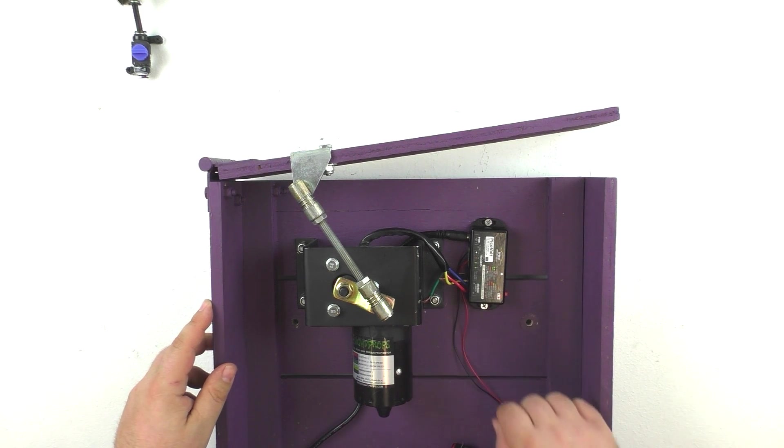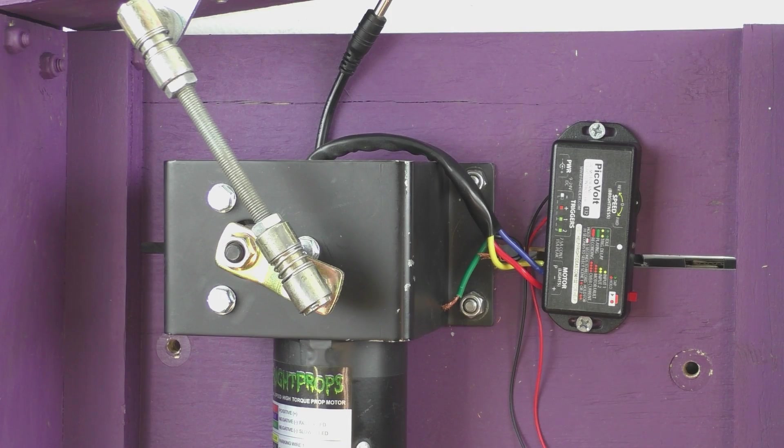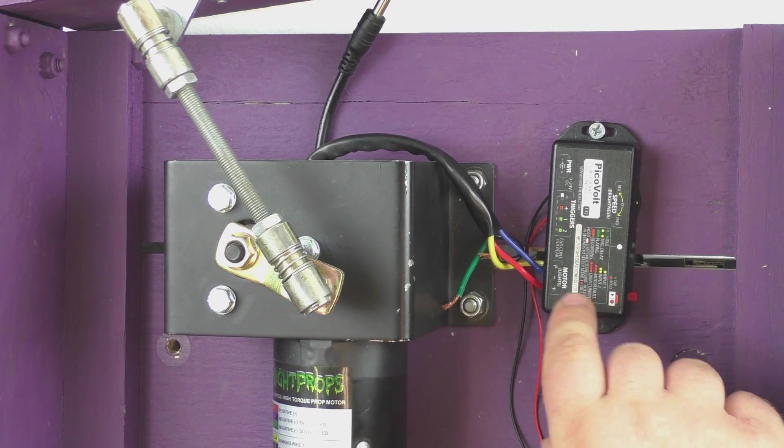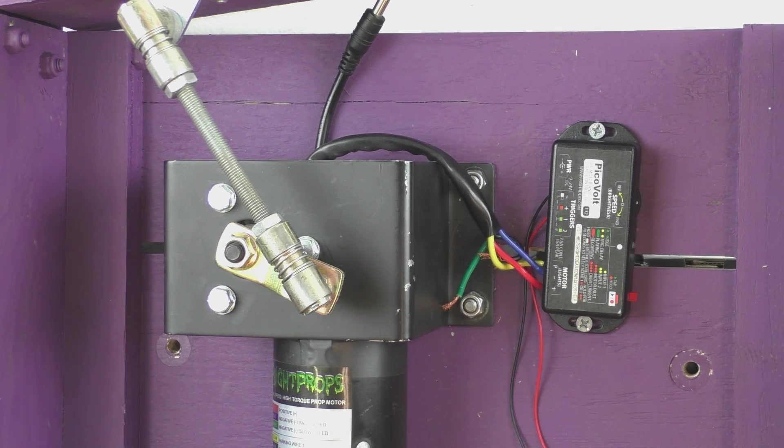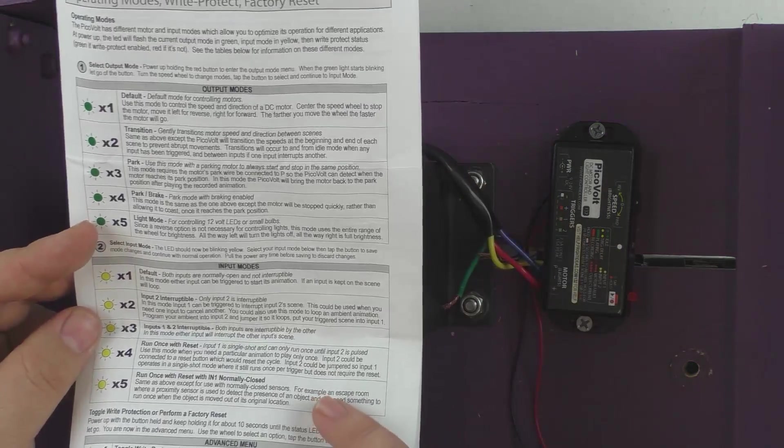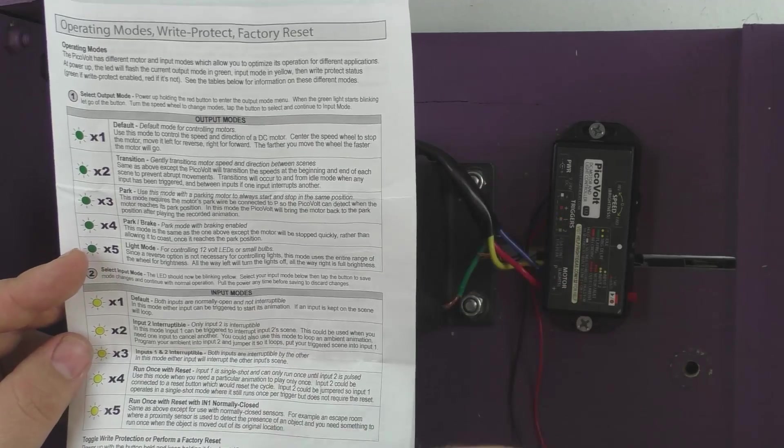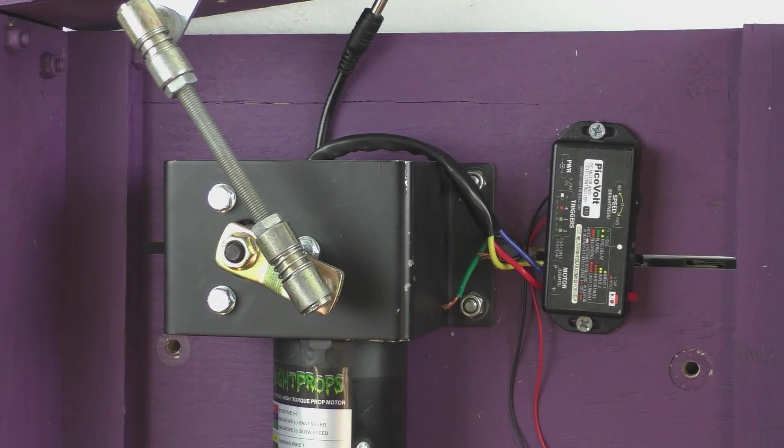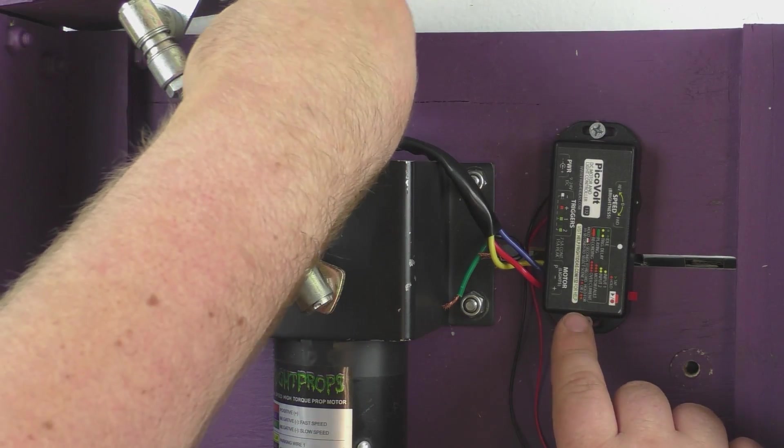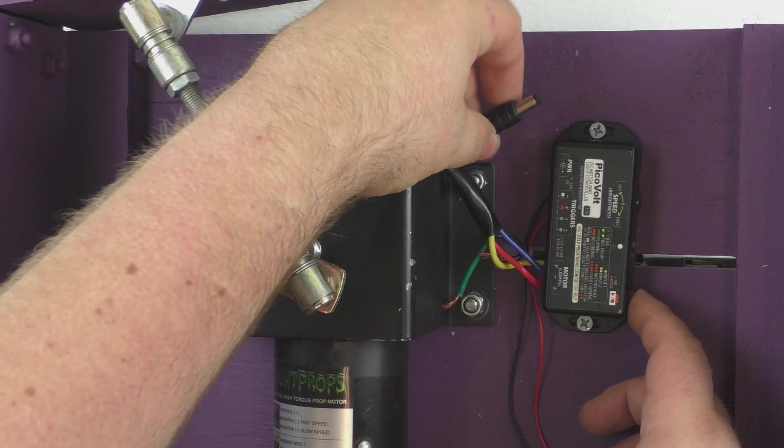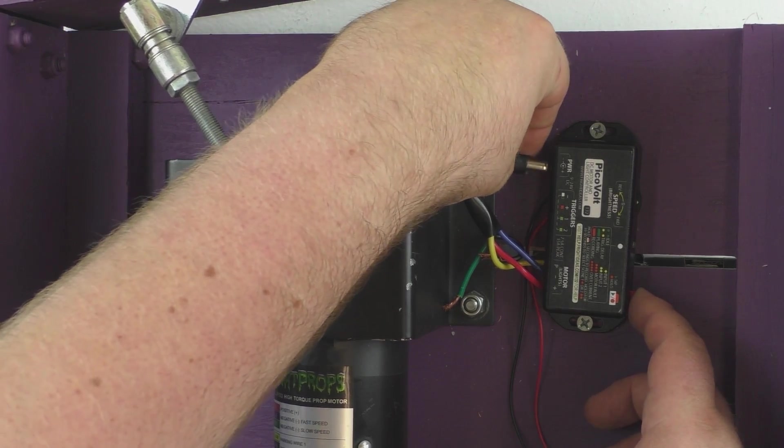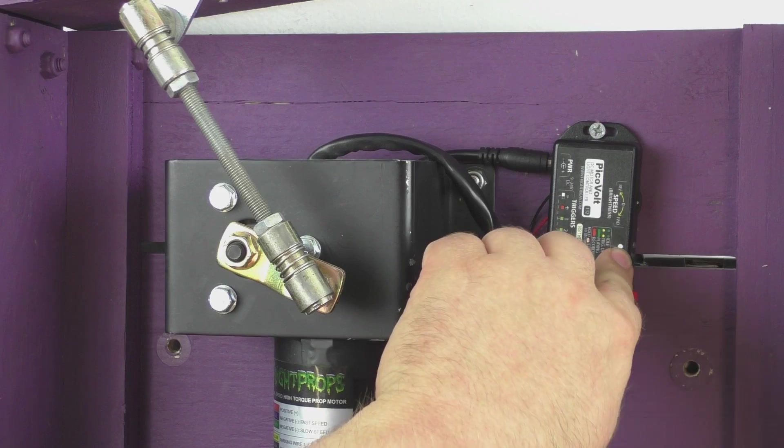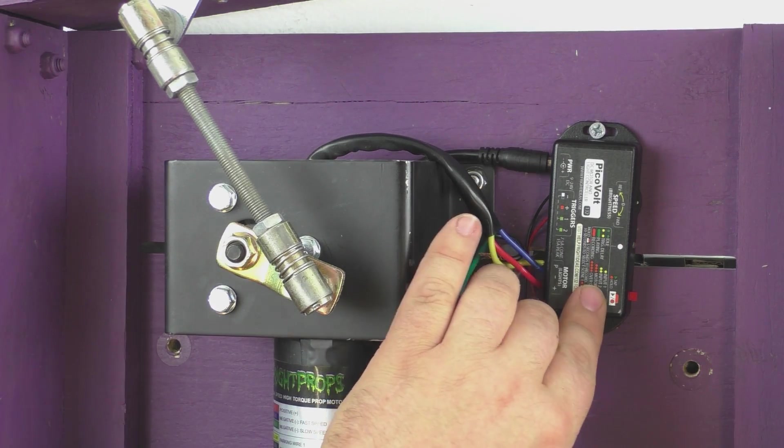So let's go ahead and walk through the setup of the PikaVolt. The PikaVolt has several options to choose from and we're going to go ahead and show you the options we're going to be using for the setup with our lid opener here. All of the options are shown in the quick start guide. You can go through and read all the different options you have available and we'll touch on them briefly as we go through the setup here. In order to enter the setup mode of the PikaVolt we just need to hold down the red record button on the top, plug power into the unit, and release the record button while the green light is flashing. We've now entered the setup.